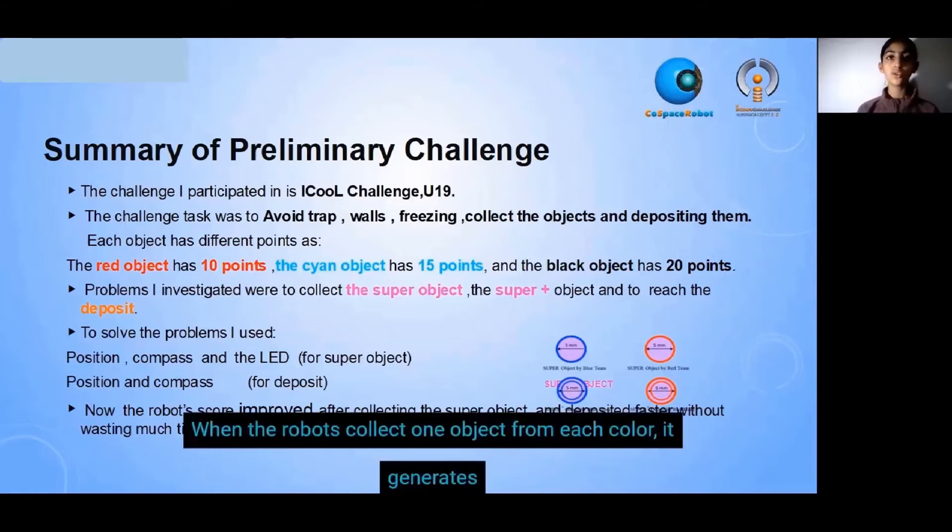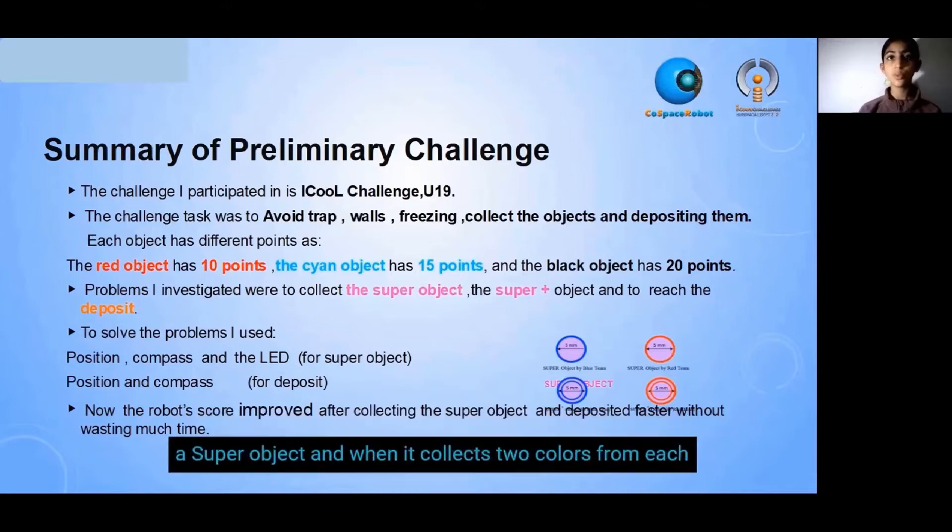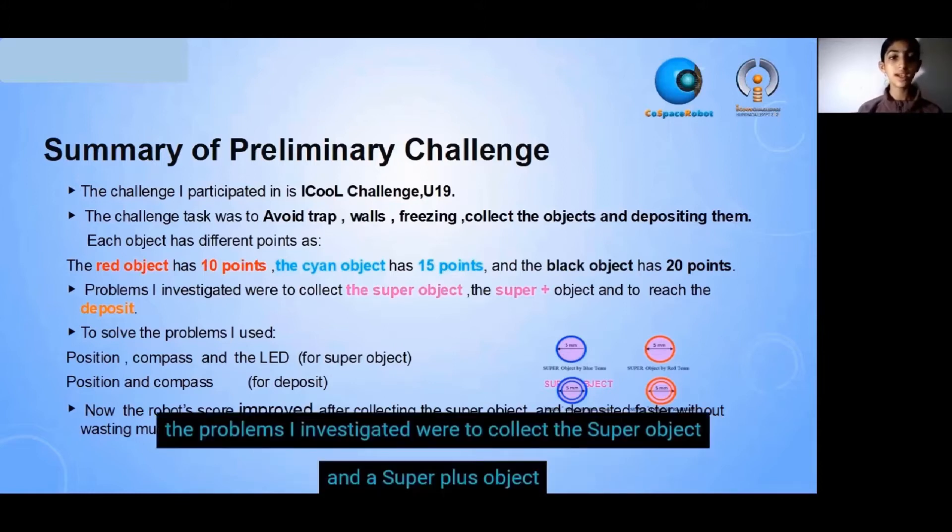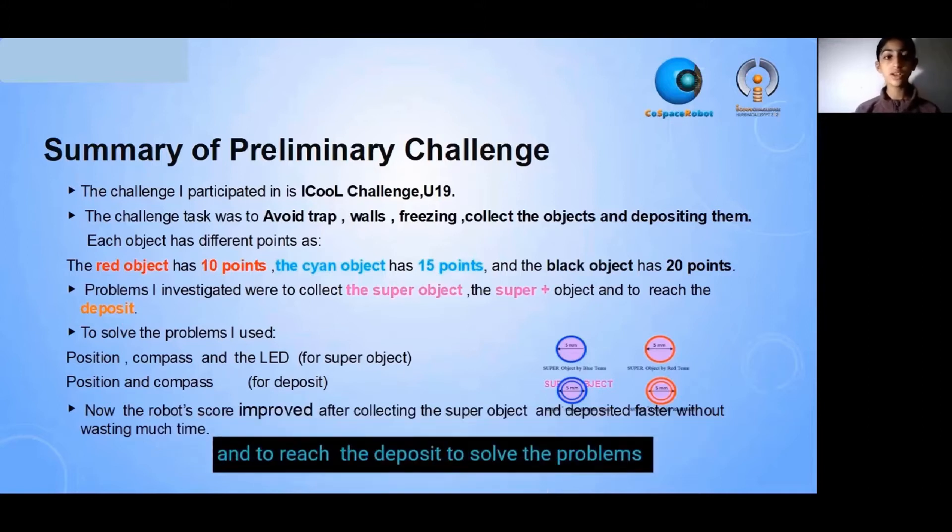When the robot collects one object from each color, it creates the super object. When it collects two objects from each color, it creates the super plus object. Problems I investigated were to collect the super object and the super plus object and to reach the deposit.